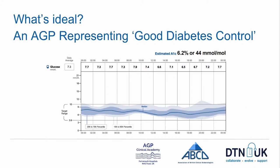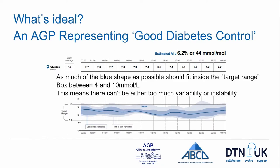This is a reminder of the profile that we're aiming for. Effectively, what we're seeing is that almost the entirety of the blue profile is fitting within a target range between 4 and 10 millimoles per litre. And of course, for the profile to fit within 4 and 10 millimoles per litre, there can't be too much variability or day-to-day instability.